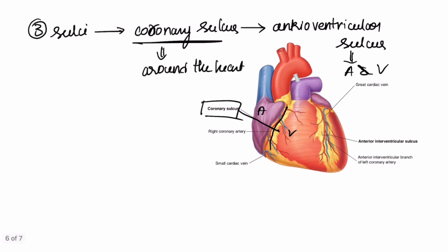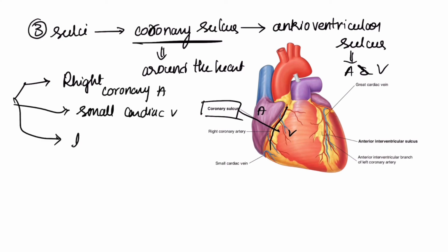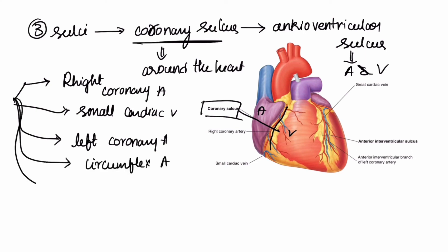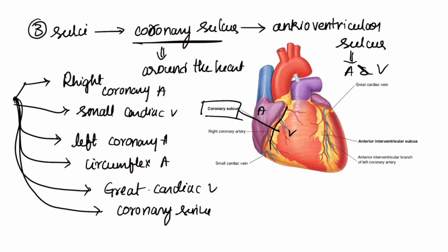The coronary sulcus contains the right coronary artery, small cardiac vein, left coronary artery, circumflex artery, great cardiac vein, and the coronary sinus.